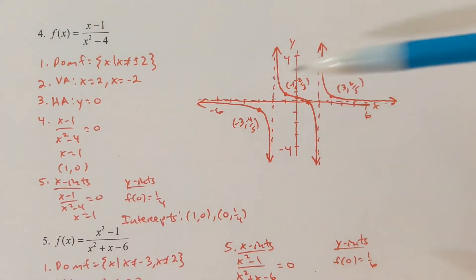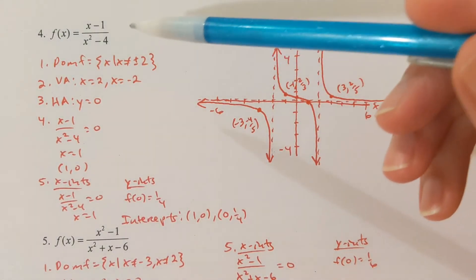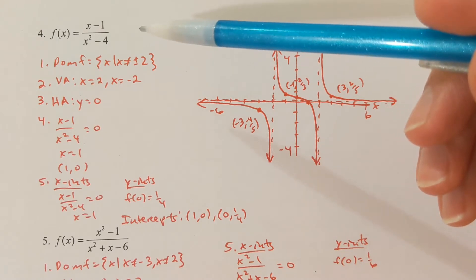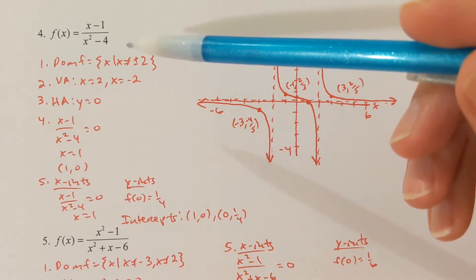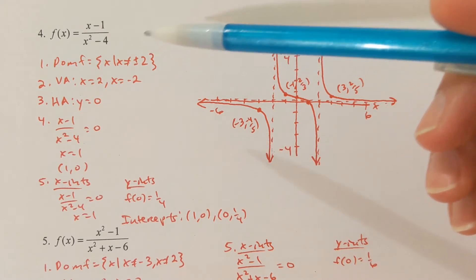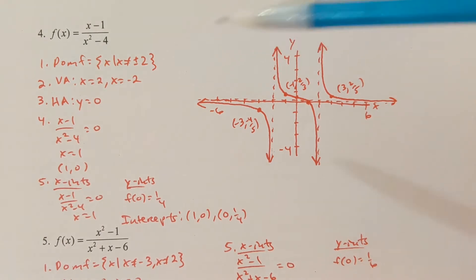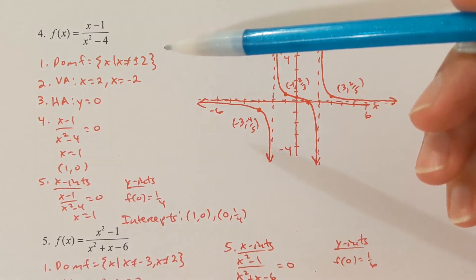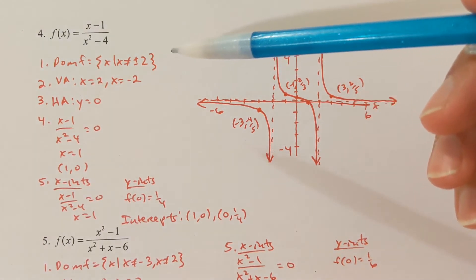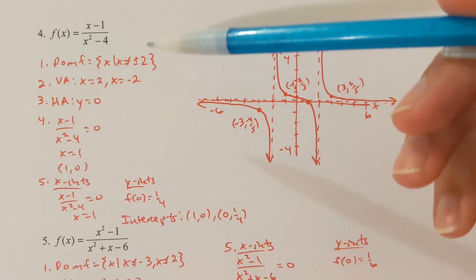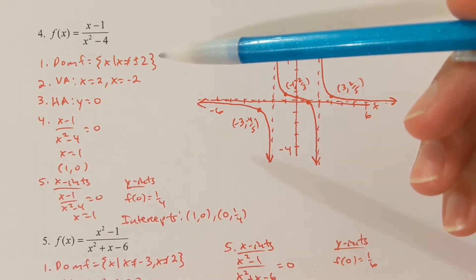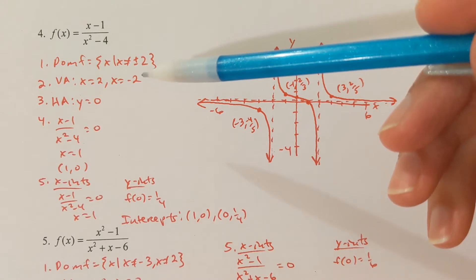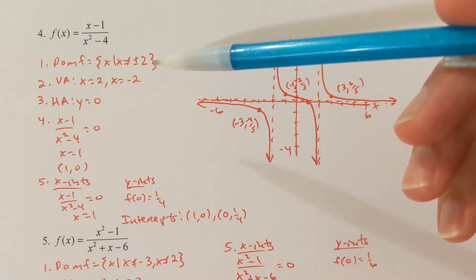We'll go through the list of six steps in order to graph f of x equals x minus 1 divided by x squared minus 4. The domain of f is the set of all x such that x is not equal to plus or minus 2. Because we're throwing away 2 and negative 2, we're going to have two vertical asymptotes at x equals 2 and x equals negative 2.